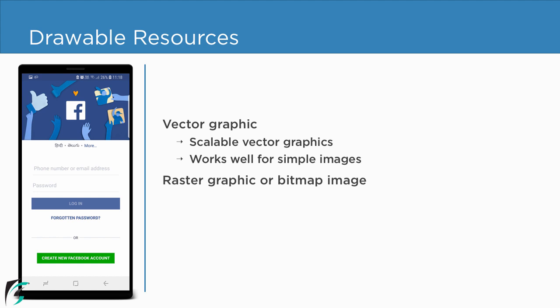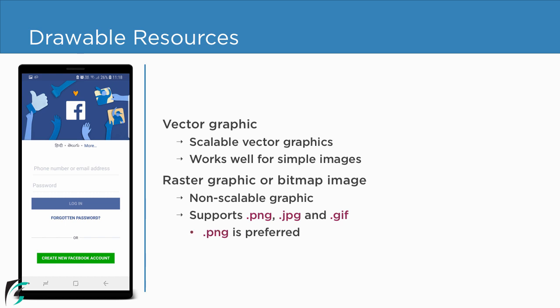Next we have the raster graphic or the bitmap image. This drawable resource is basically a non-scalable graphic — that is, the size of the graphic does not change across different devices. In Android, we can use raster graphics in the form of PNG, JPEG, and GIF files, but it is highly recommended to use the PNG format whenever possible.